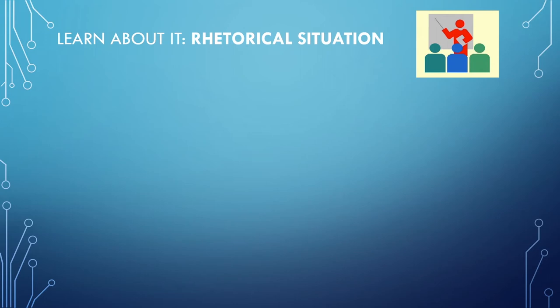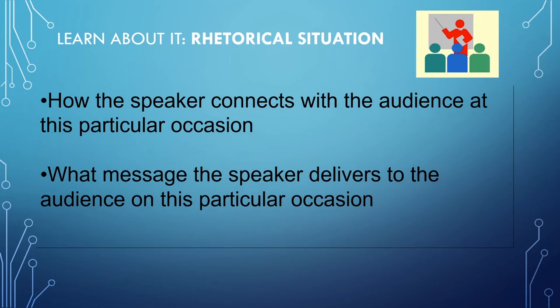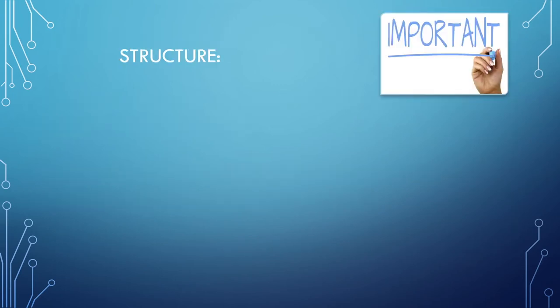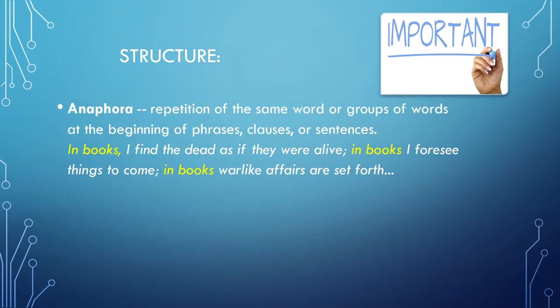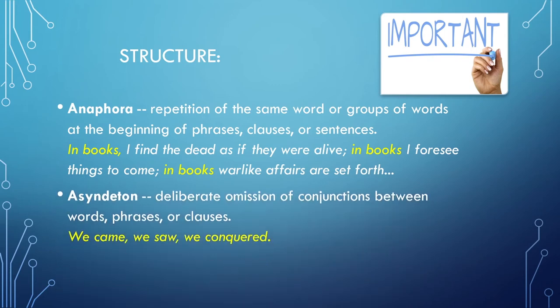We're going to review the rhetorical situation — how the speaker connects with the audience at this particular occasion and what message the speaker delivers. We'll also review some structural terms. The first is anaphora: the repetition of the same word or group of words at the beginning of phrases, clauses, or sentences — you can see in yellow the phrase that's repeated. And asyndeton — the deliberate omission of conjunctions between words, phrases, or clauses.